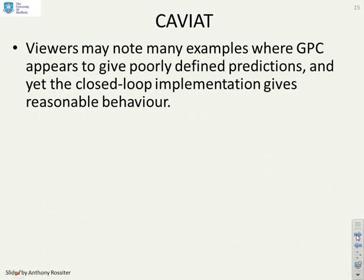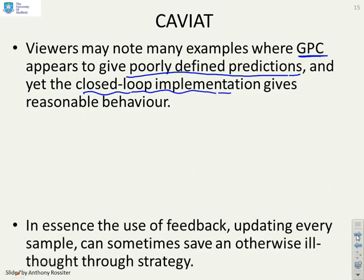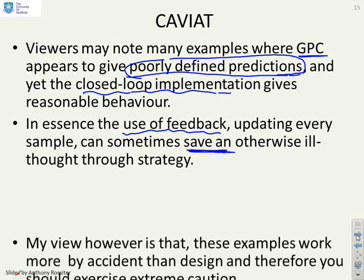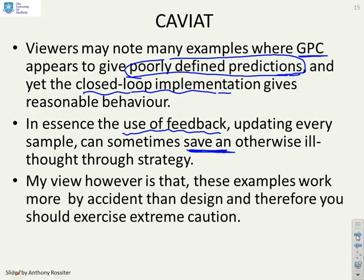Now some caveats: viewers may note many examples where GPC appears to give very poorly defined predictions and yet the closed loop implementation gives reasonable behaviour. And that's something that was observed in the early literature. Often GPC worked quite well but people never really noticed that the predictions weren't that wise. So in essence what happened was the use of feedback, that is updating every sample, can sometimes save an otherwise ill thought through strategy.